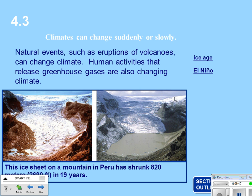Human activities that release greenhouse gases are also changing the climate. These ice sheets on a mountain in Peru have shrunk by 820 meters in 19 years. You can see the whole outline of the glacier before, whereas now this area is all water and only a tiny bit of the glacier remains.